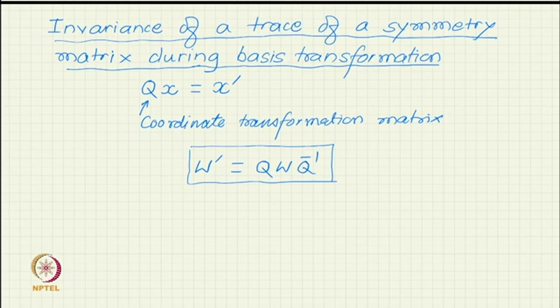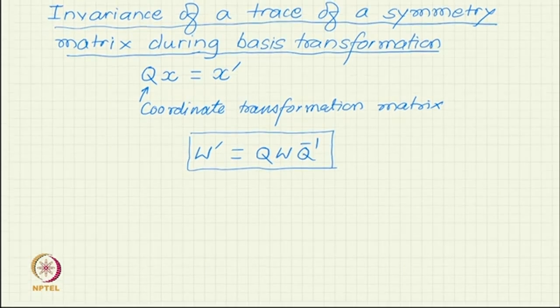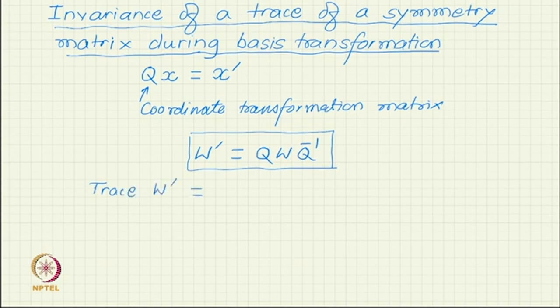When we say that trace of a matrix does not change, what we are saying is that the numbers of W' will be different from numbers of W, but when you add the diagonal terms, they will come out to be the same. So, trace W' should be trace W. Now, how do we prove this?